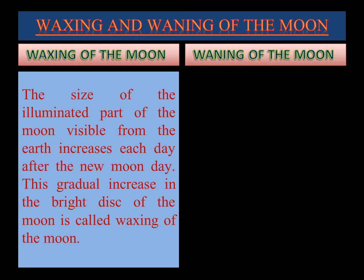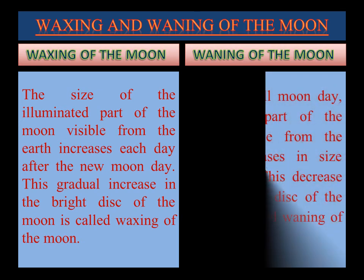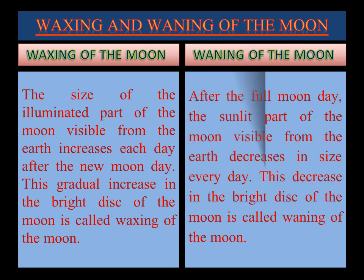Similarly, after the full moon day, the sunlit part of the moon visible from the earth decreases in size every day. This decrease in the bright disk of the moon is called waning of the moon. Therefore, waning of the moon occurs from the full moon day to the new moon day. I hope waxing and waning of the moon is clear now.